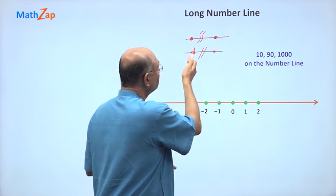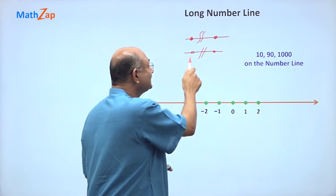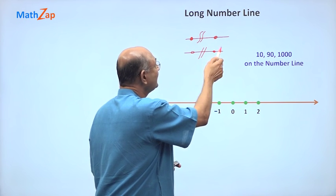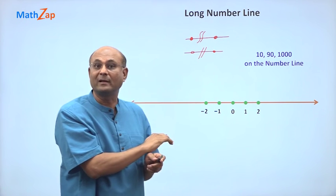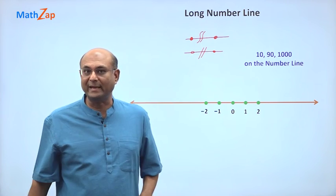It could be 1 unit, it could be 100 units, it could be 1000 units. So the break just tells you that this point is to the right of that point. It does not tell you how many points are there in between.